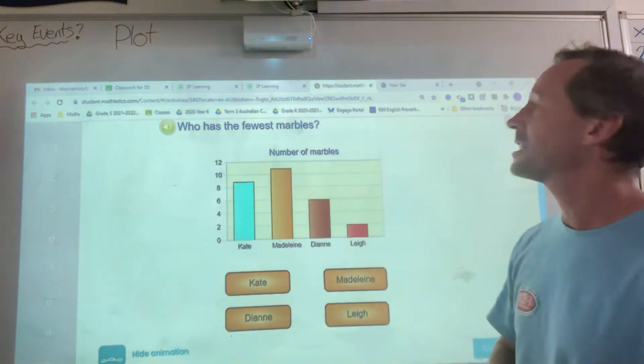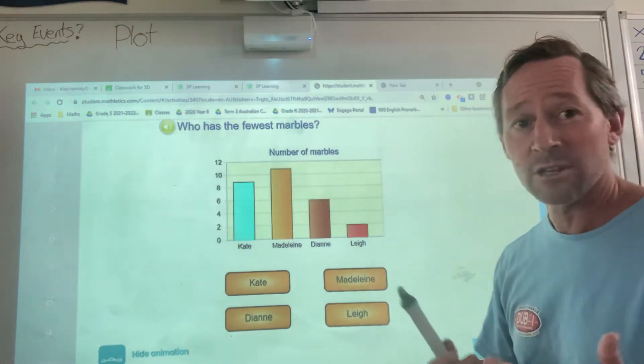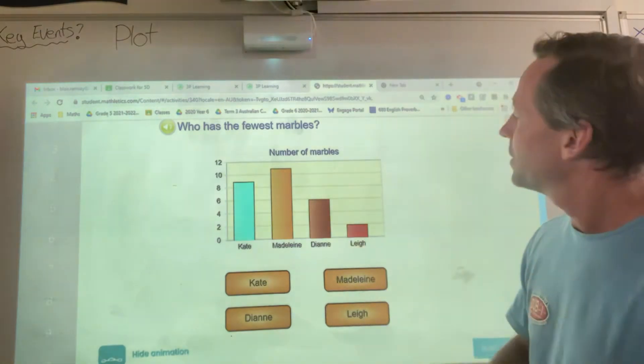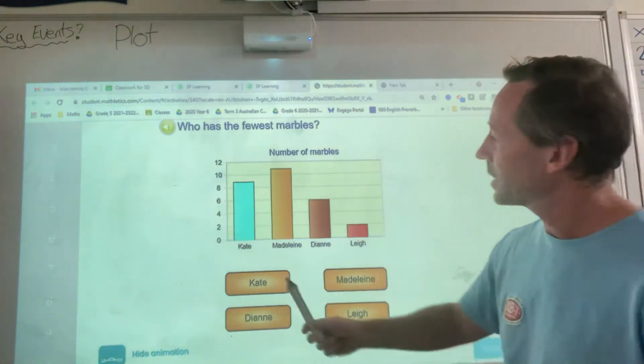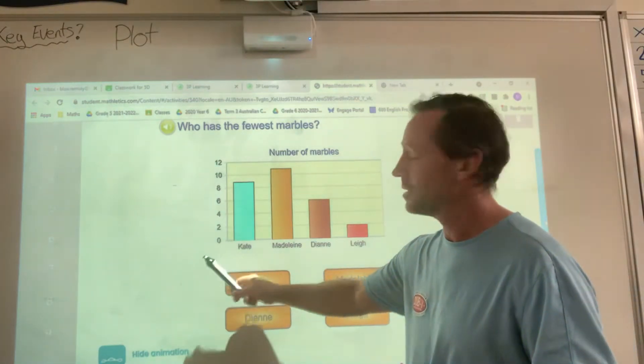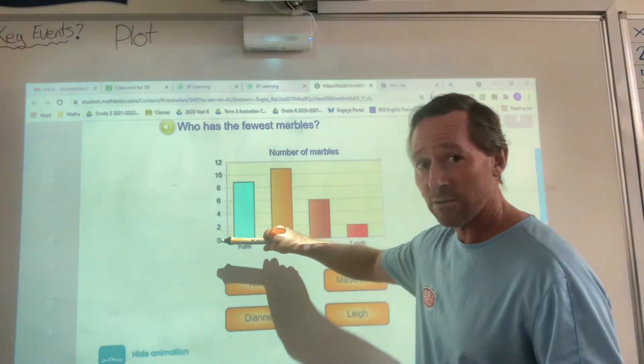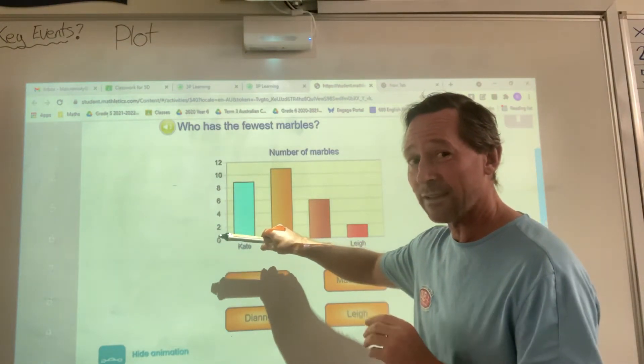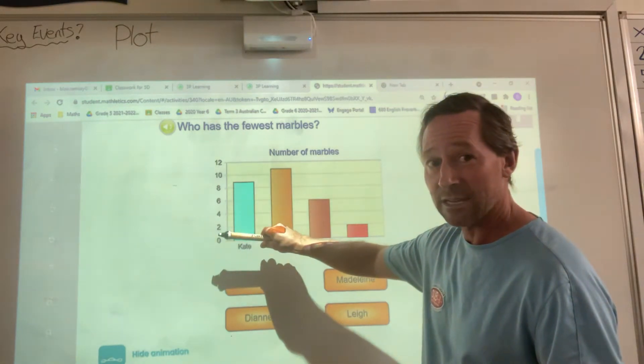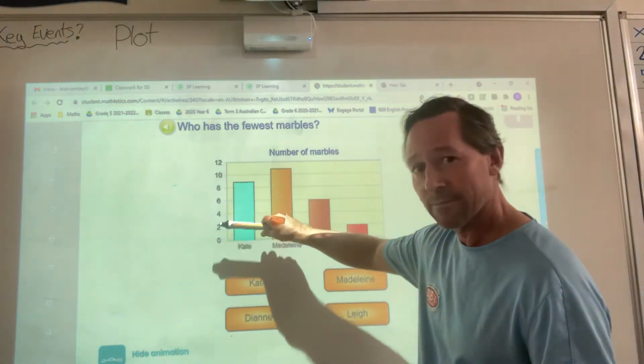The question, who has the fewest marbles? As long as you know what fewest means, which means the least, the smallest amount, then you could try and work it out. Another thing we need to be aware of is the scale. It always starts at, in this particular case, it starts at 0. Most of them do. Sometimes they don't have to. 0 is in line with the x-axis. It has to be here.